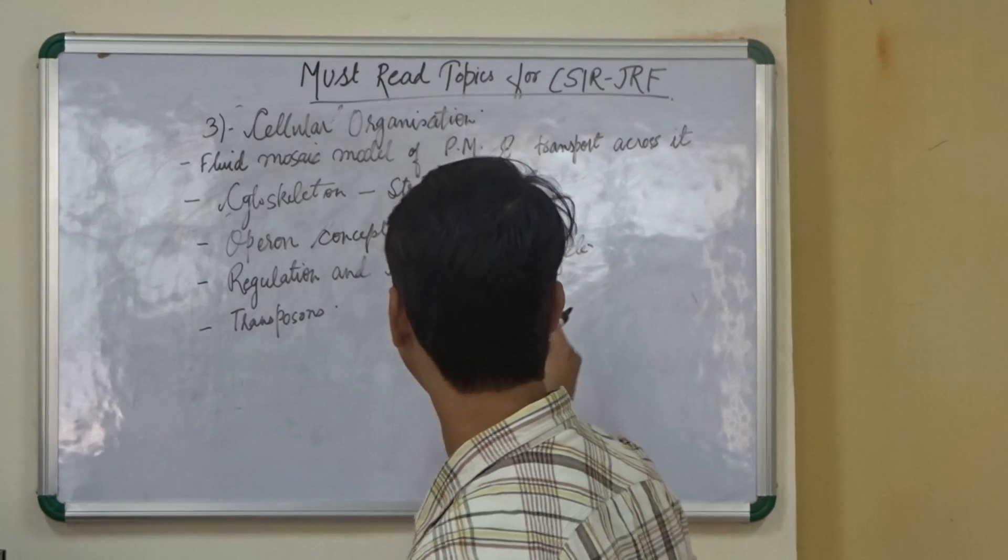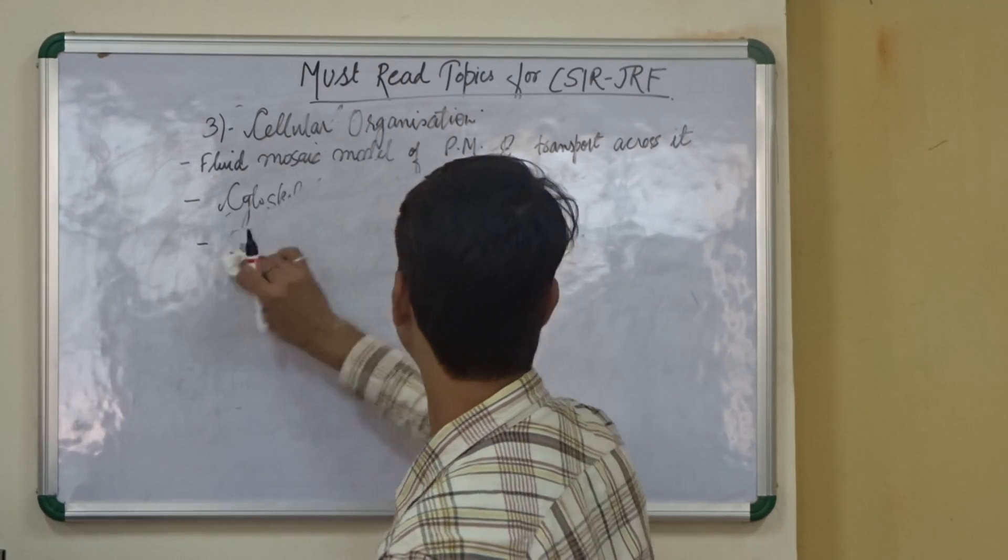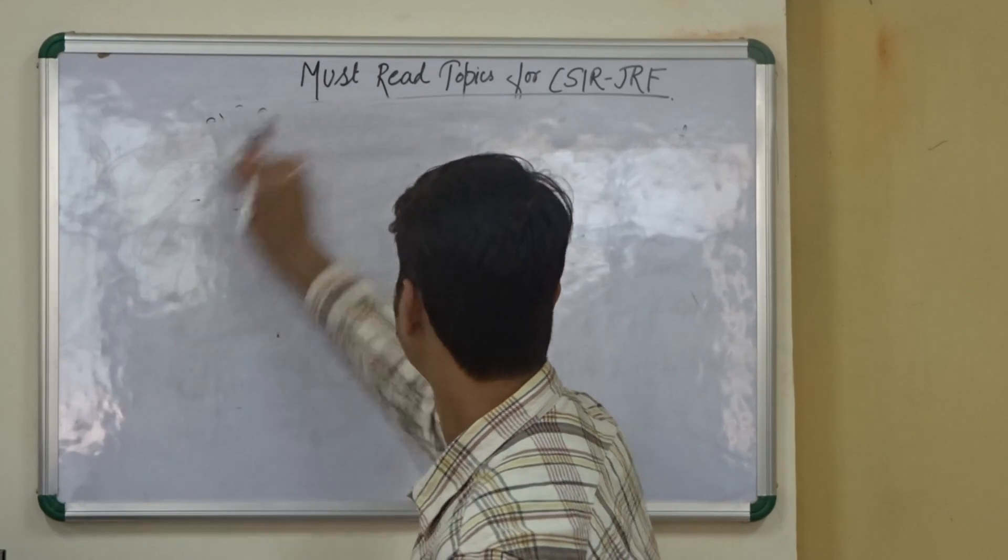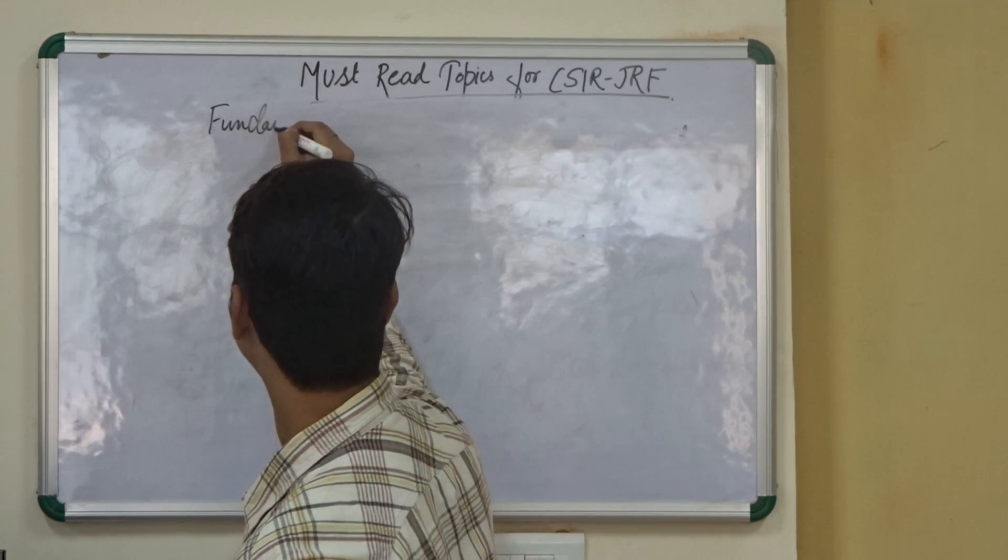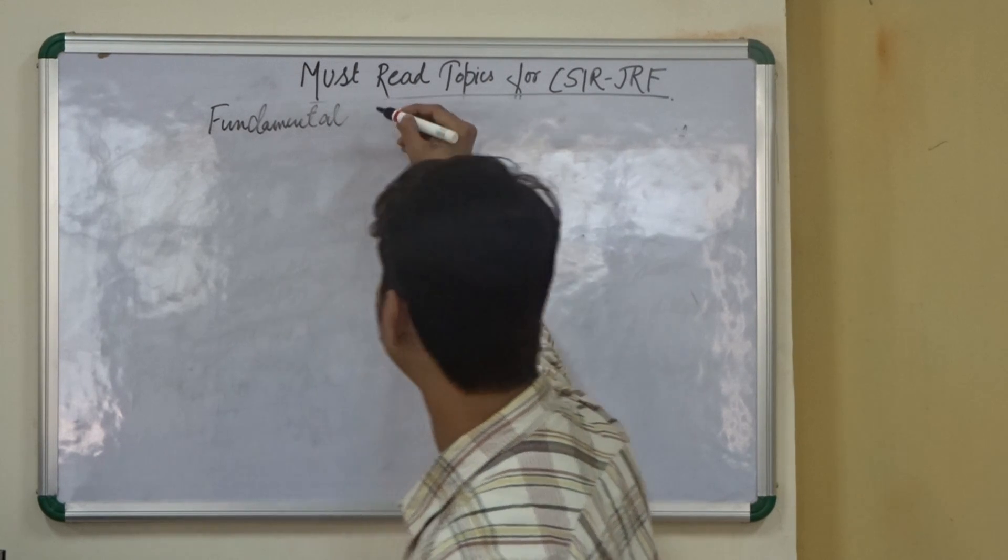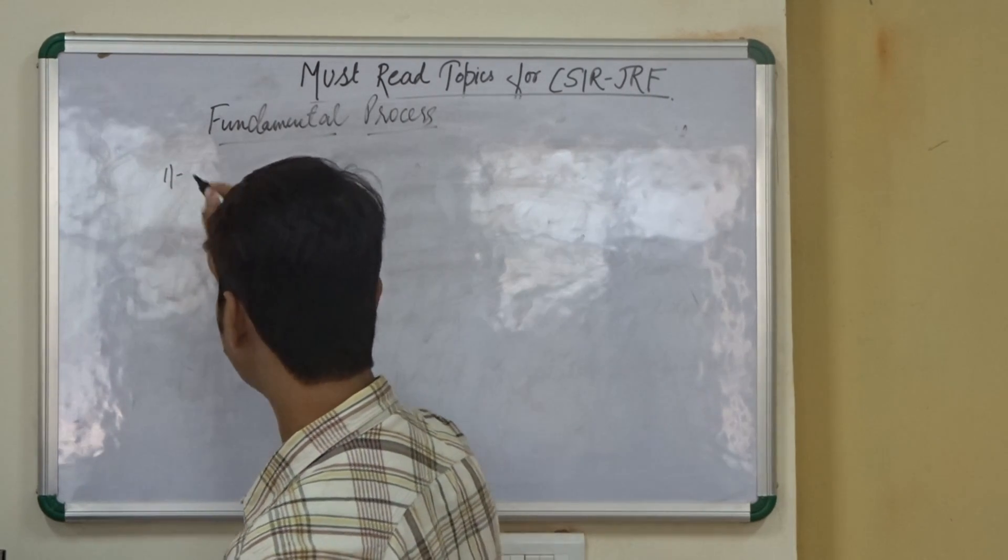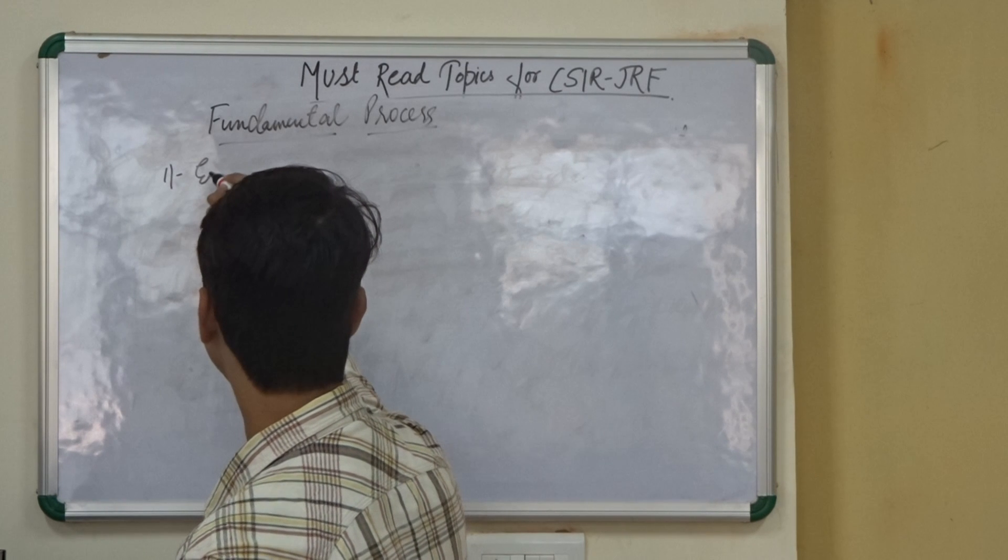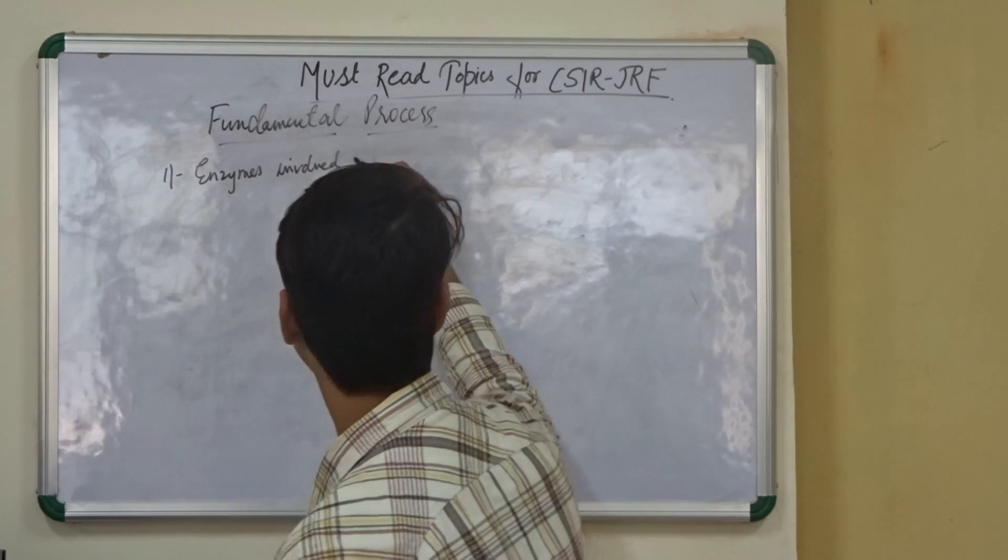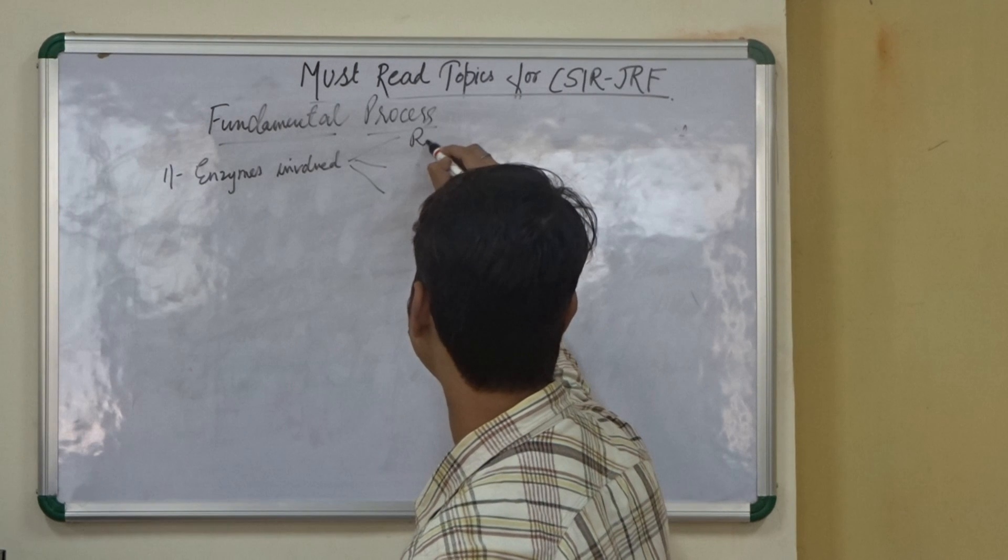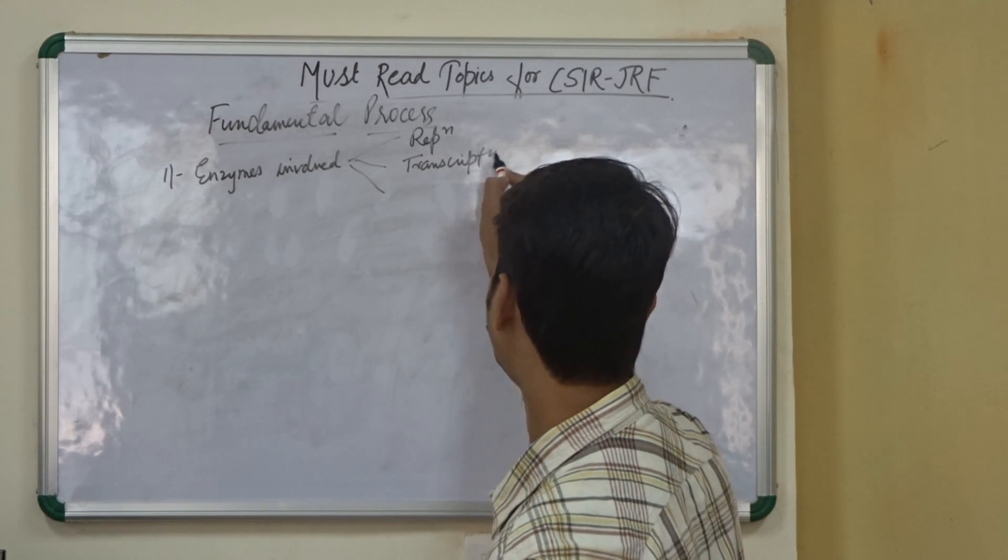Then, we have one more topic of fundamental processes. In fundamental processes, this is a very important unit. We must have gone through it completely. But specifically, we are going to tell you that you must need to know the enzymes involved in all the three processes. The replication, transcription and translation.